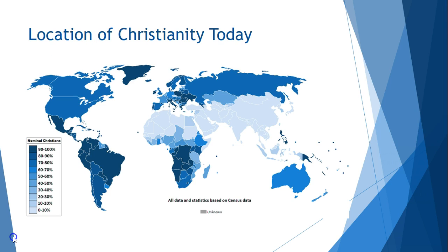Christianity is located all over the world, with the highest populations in Eastern Europe, South and Central America, Central and Southern Africa, and areas of Western Europe and North America. While there are small populations, Christians form minority groups in most of the Middle East and Northern Africa due to the prevalence of Islam, and most of Asia due to Hinduism, Buddhism, or other Eastern religions or atheism.